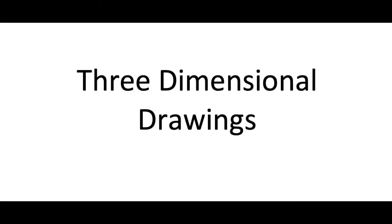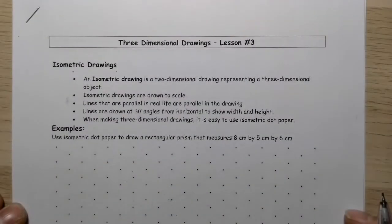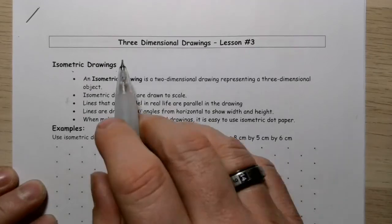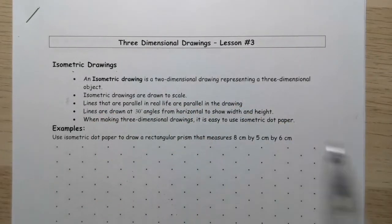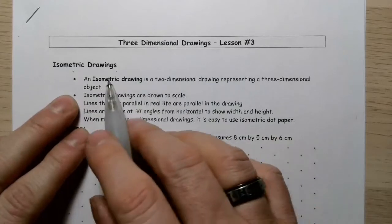In this chapter, we're working with scale representations. In this lesson, we're going to look at three-dimensional drawings, and we'll start by looking at isometric drawings.